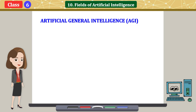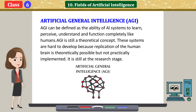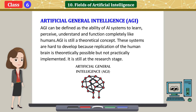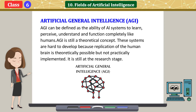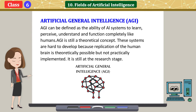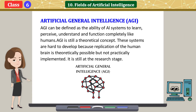Artificial General Intelligence (AGI) can be defined as the ability of AI systems to learn, perceive, understand, and function completely like humans. AGI is still a theoretical concept. These systems are hard to develop because replication of the human brain is theoretically possible but not practically implemented. It is still at the research stage.